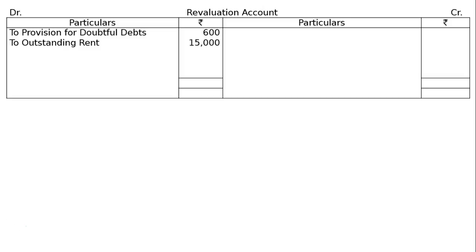The next item is outstanding rent. Outstanding rent amounted to Rs. 15,000. Rent is already Rs. 15,000, hence increase in liability is an expenditure or loss to the firm, and it is debited to the revaluation account.